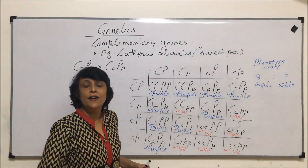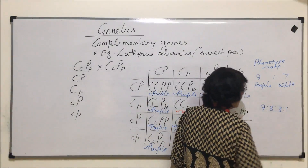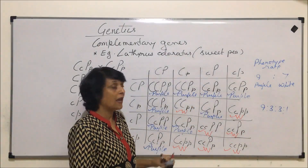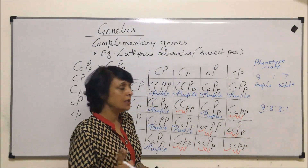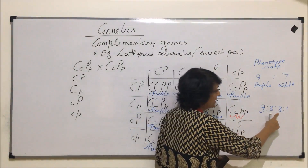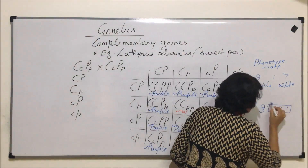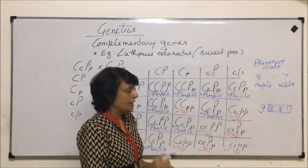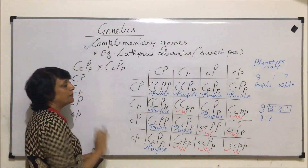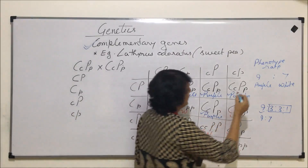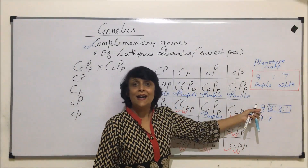This 9:7 ratio is actually a modified ratio of the typical 9:3:3:1 ratio obtained in a dihybrid cross. In the standard dihybrid cross, the 9 show both dominant genes, three show one dominant, three show the other dominant, and one shows all recessive. In complementary gene inheritance, the last three groups — both three categories and the one — all produce white flowers, so they combine to give seven white, resulting in the modified 9:7 ratio.